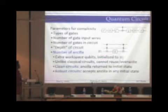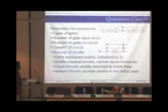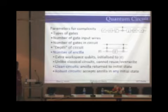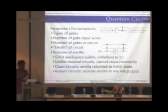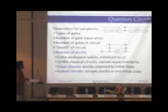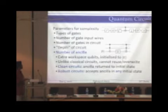Since we want to compare quantum with classical circuits — which only compute classical functions — we restrict ourselves to circuits which compute classical functions. The inputs will still represent classical binary inputs, x_1 to x_n, represented as the initial computational basis state of the circuit. The output is again a classical boolean output: we measure the circuit at the output qubit, and whatever value we get after measurement, that is the output of my circuit. Now let's look at the parameters we're going to use. As before, we have the types of gates and the number of gate input wires. The depth of a circuit is the number of gate layers from output to input — which for a quantum circuit is just the number of layers.